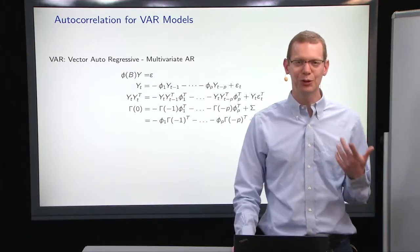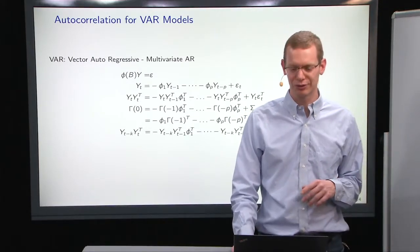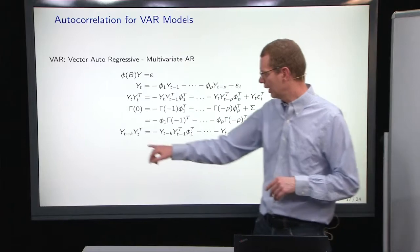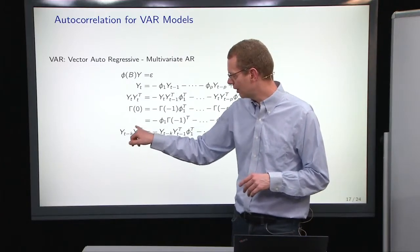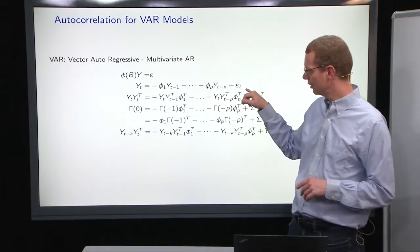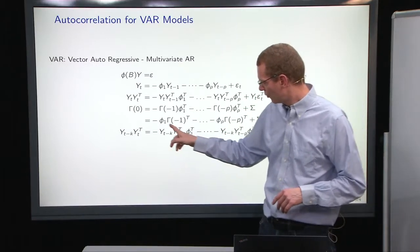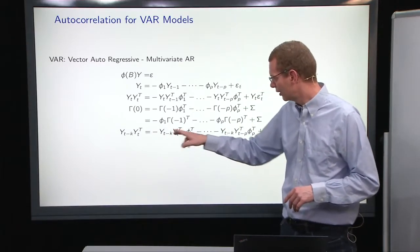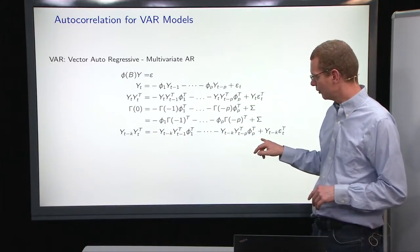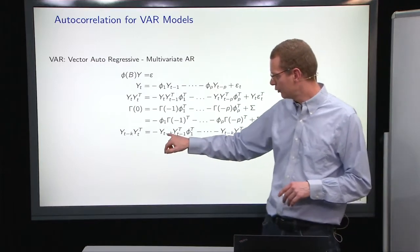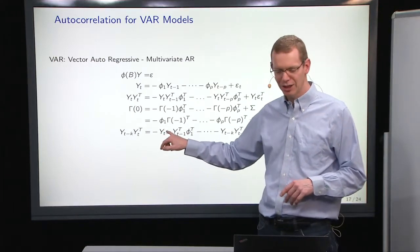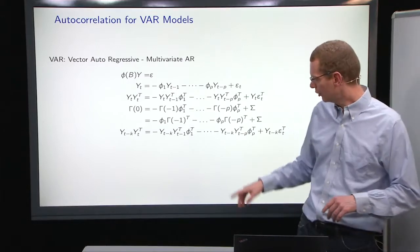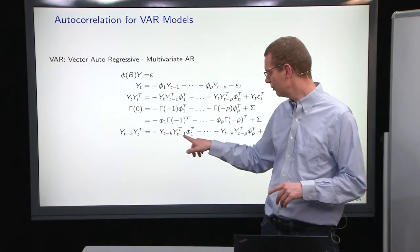Now, if we do it for other lags, I'll just do the general expression here for lag k, post-multiply by the transpose of the process up here. Now, what you have is then different products out here where you have to care about what is the difference in time here. So from t minus k to t minus one, well, then you have k minus one steps forward in time.